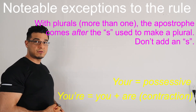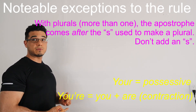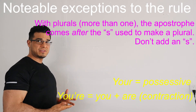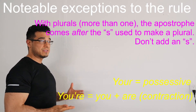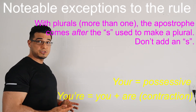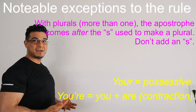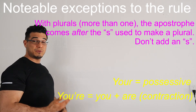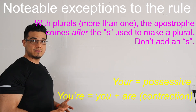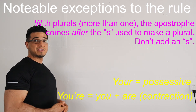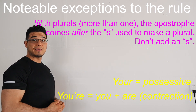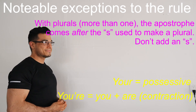Possessives indicate that something is owned or closely related to a noun or a pronoun. Hopefully this was helpful and clarified the concept. If you haven't already, please subscribe so you can continue to receive updates on the content I'm producing related to English language development. Thank you.